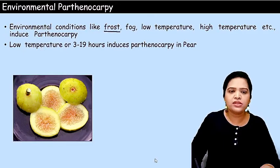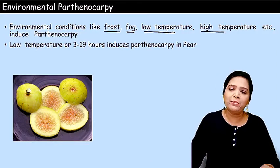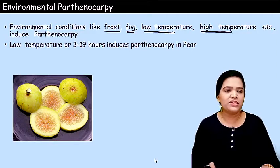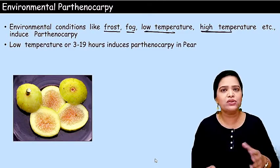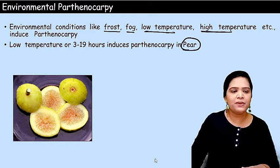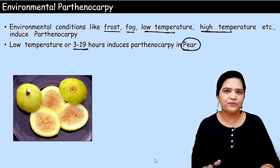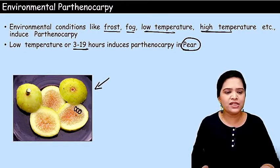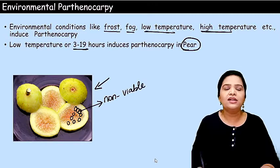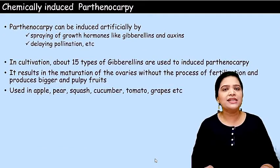The second type is environmental parthenocarpy. During conditions like frost, fog, low temperature, or extreme heat, parthenocarpy is naturally induced in some plants. For example, in pear plants, keeping them at low temperature for 3 to 19 hours induces parthenocarpy. In this picture you can see fig — these small seeds of fig are non-viable, sterile seeds. Environmental conditions induce parthenocarpy in these plants.